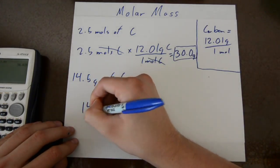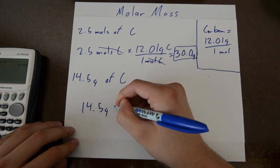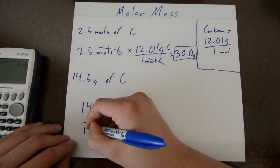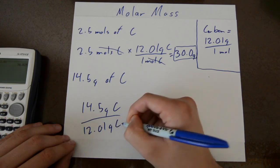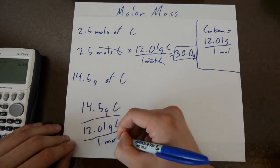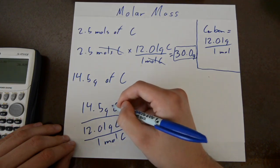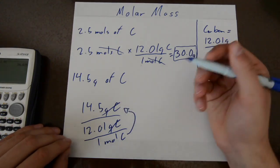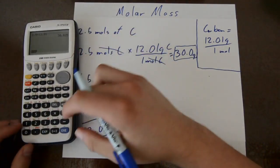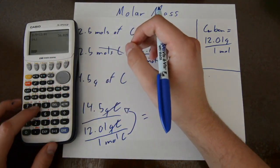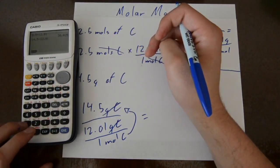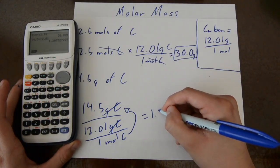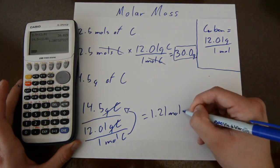So right here it says you have 14.5 grams of carbon. And so you can divide by 12.01 grams of carbon divided by 1 mole of carbon, and so then these would cross out and these units would flip up to the top and you'd get moles. And so in this calculation you'd get 14.5 divided by 12.01 and you'd get 1.21 moles of carbon.